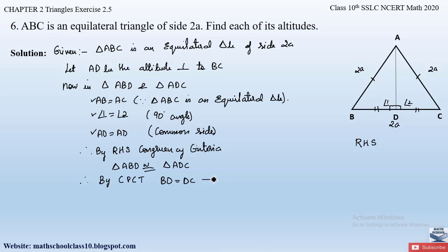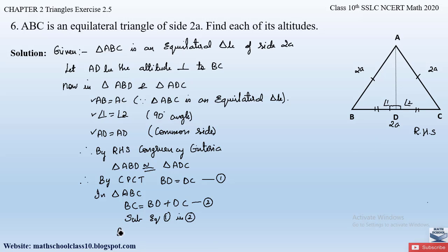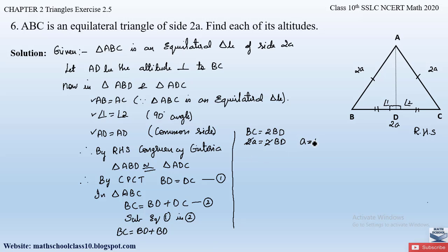Let BD = DC be equation 1. In triangle ABC, BC equals BD plus DC — let this be equation 2. Substituting equation 1 into equation 2: BC = BD + BD = 2·BD. From the figure BC = 2a, so 2a = 2·BD, giving us BD = a. Let this be equation 3.